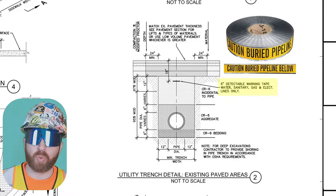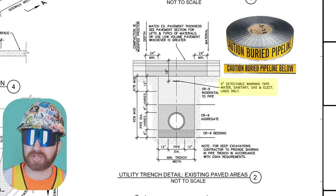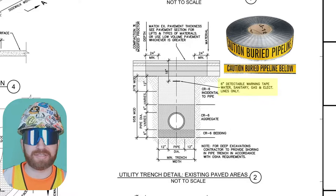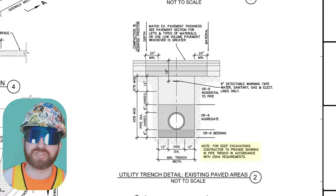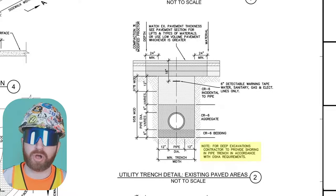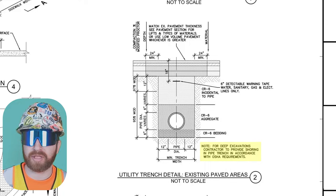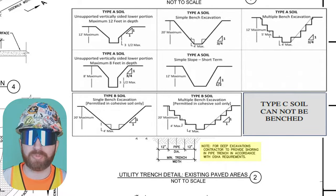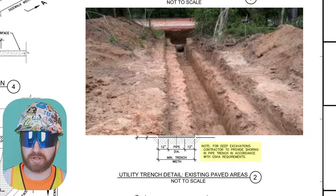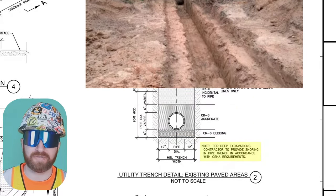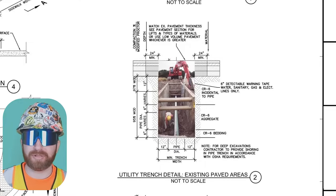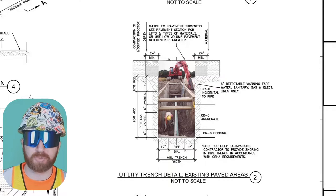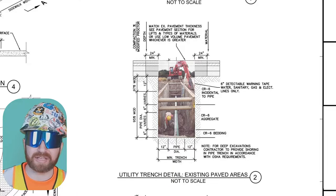Above the pipe, there's a detectable warning tape called out — the last means of protecting this pipe from future excavations. If someone excavates and hits this tape, they know to stop because a pipe is immediately below. The last note is a safety note: because we're only saw cutting a small width, you can't bench or slope the excavation since existing parking lot is on the sides. So a trench box with a ladder as the means of exit will likely be used — bracing against the side walls to prevent soils from collapsing in on workers in the excavation.